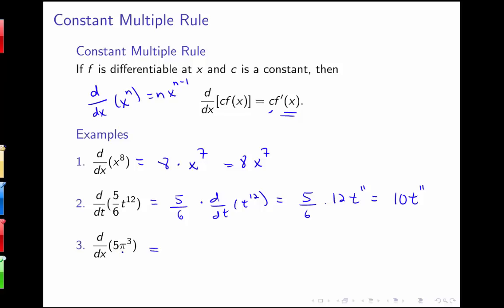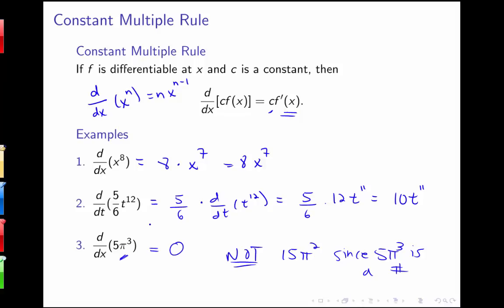Don't let this last one fool you — it might be tempting to say that the derivative of 5π³ is 15π², but this is just 0, not 15π², since 5π³ is just a number. It's common to see these sort of tricky-looking numbers that show up in problems; they're just testing that you know that the derivative of any number is 0.